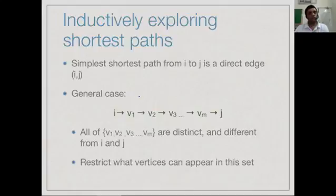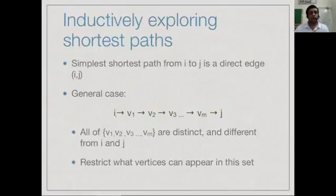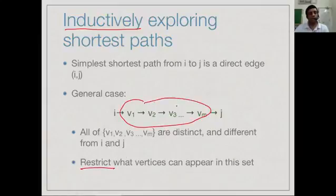In general a single edge may not be the shortest path, because even if such an edge exists there may be a way, because of edge weights or negative edge weights, of reaching from i to j by a longer sequence of edges but with a shorter overall cost. What we do know is that the path from i to j goes through some intermediate vertices, all different from each other — no vertex is visited twice — and none of these intermediate vertices is either i or j.